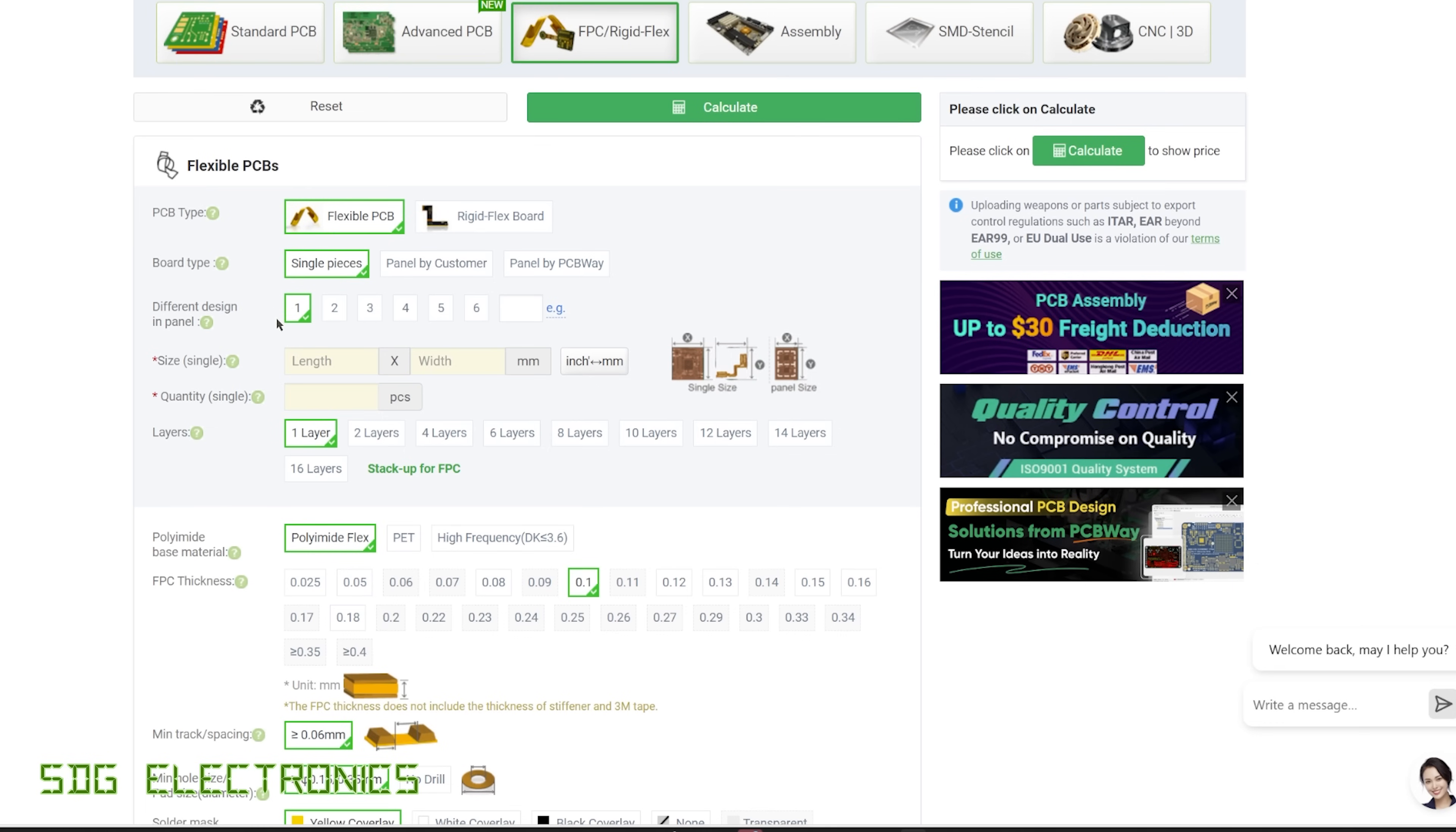But to get the special pricing, either pick the one layer, two layer, or four layer option and you'll get a discount when you add the item to your basket. So don't forget to visit PCBWay.